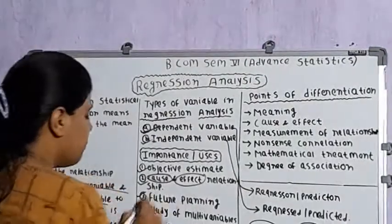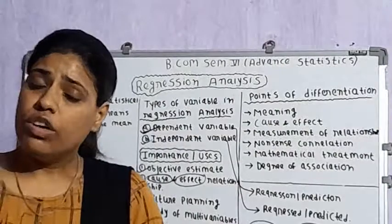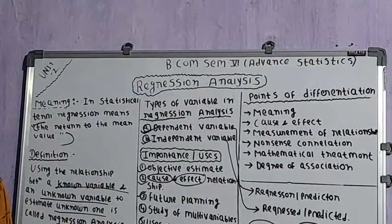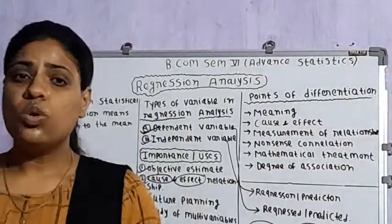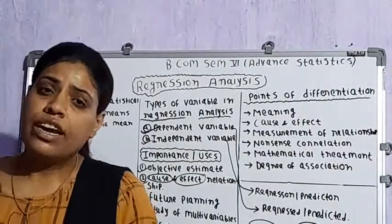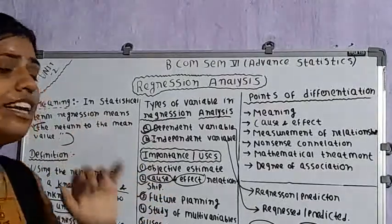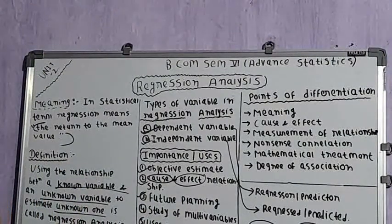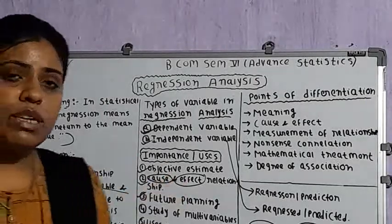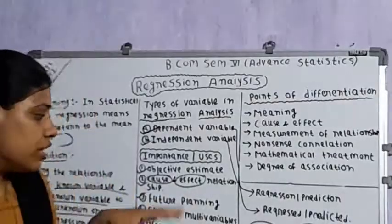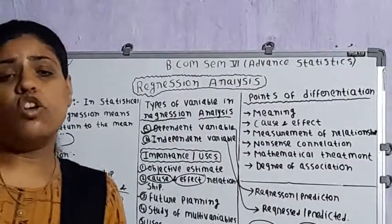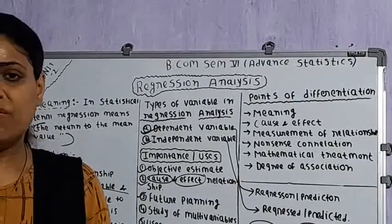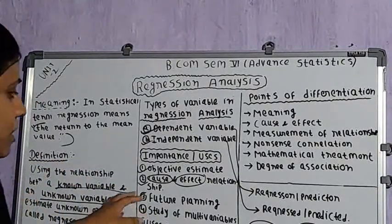Another importance is future planning. Regression is a very important tool for businesses because it helps estimate many variables, and the estimation of these variables helps in making future plans. For example, a business planning to increase advertisement expenditure can use regression analysis to estimate the impact on sales. Similarly, if a business wants to increase production, regression analysis can estimate the effect — such as increased sales, income, customer base, and employee requirements.